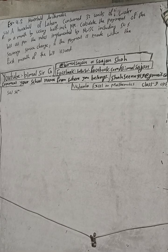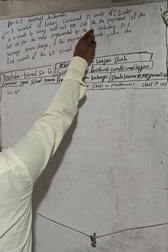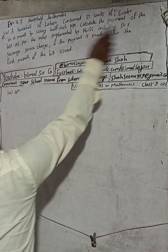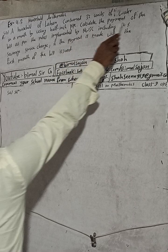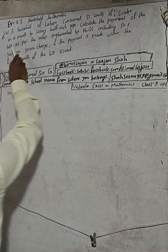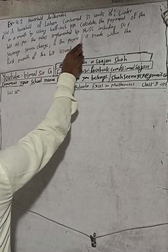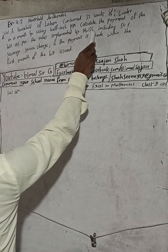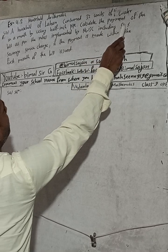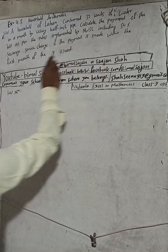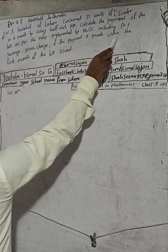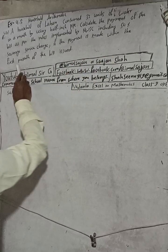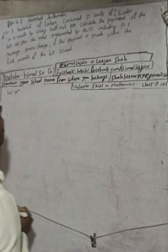The question is: A household of Lahan consumed 32 units of water in a month by using a half-inch pipe. Calculate the payment of the bill as per the rules implemented by NWSC, including 50% sewerage service charge, if the payment is made within the first month of the bill issued.